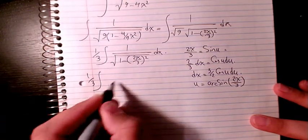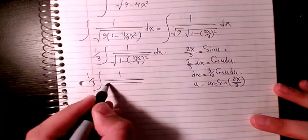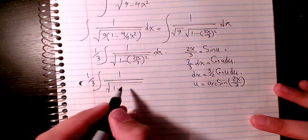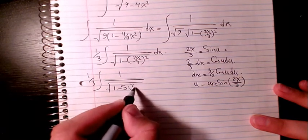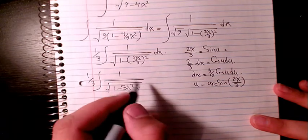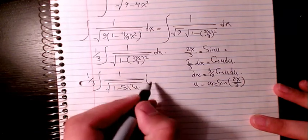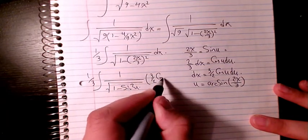So if I sub everything in here, it's going to be 1 over 3, 1 over square root of 1 minus sine squared u, and instead of dx I can write 3 over 2 cosine u du.